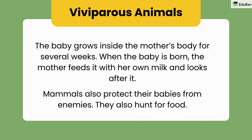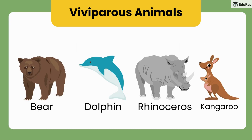In viviparous animals, the baby grows inside the mother's body for several weeks. When the baby is born, the mother feeds it with her own milk and takes care of it. Mammal mothers also protect their babies from danger and hunt for food for them. Here are some more examples of viviparous animals: bears, dolphins, rhinoceroses, and kangaroos. Isn't it amazing how different these animals look, but they all give birth to live babies?